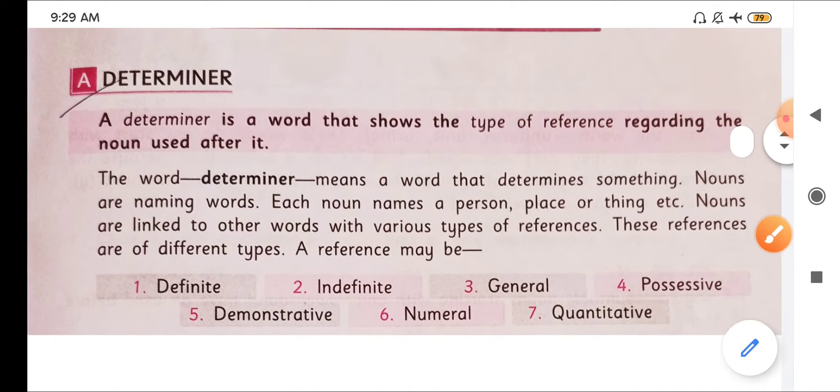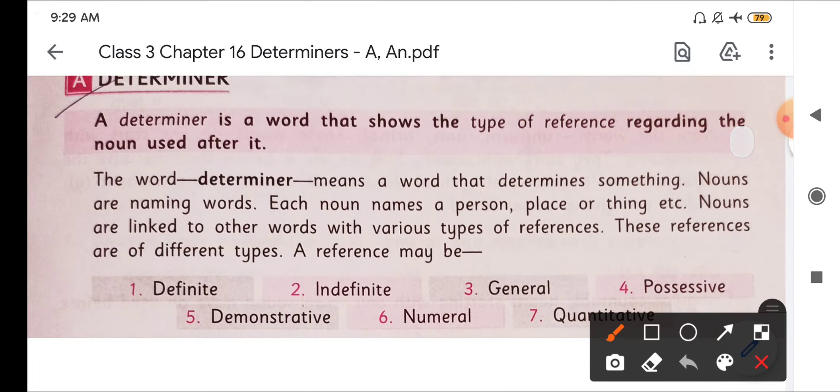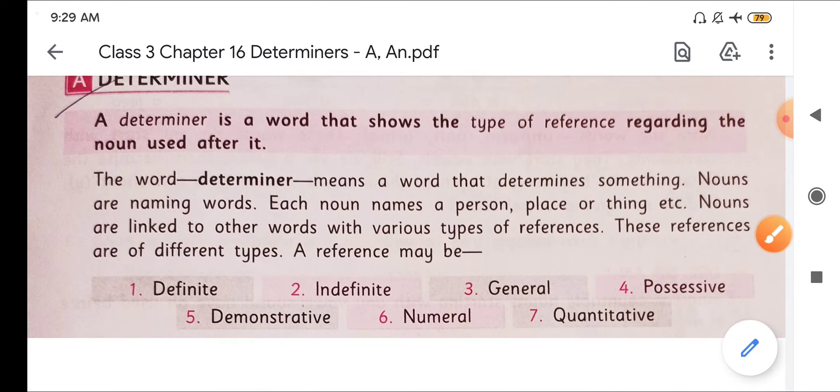See, a determiner is a word that shows the type of reference regarding the noun used after it. We use determiners before noun. So which type of determiner we should use, that we will learn today.